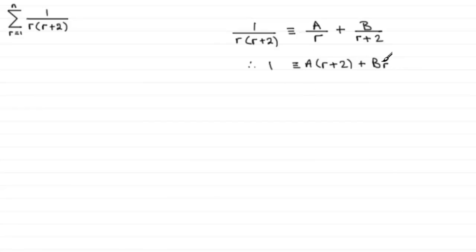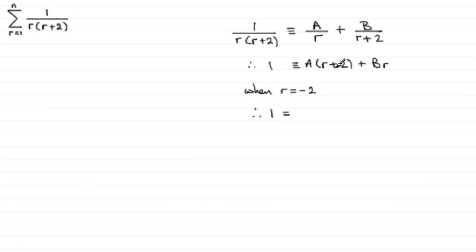To work out A and B, one common method is to let r equal particular values. If we let r equal minus 2, the left-hand side is 1, and the A(r+2) term becomes zero, leaving us with B times minus 2, which is minus 2B. So B must be equal to minus one half.